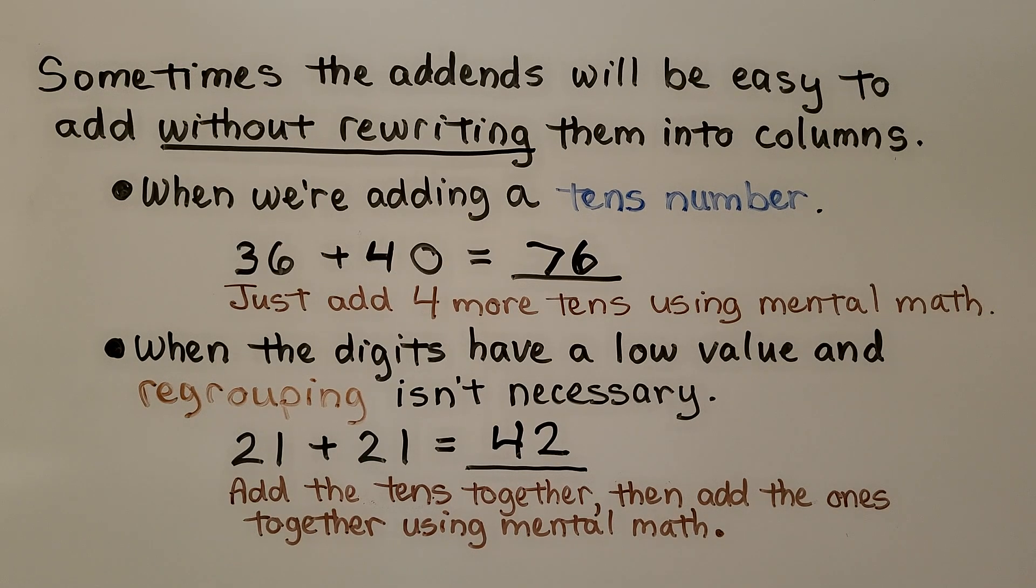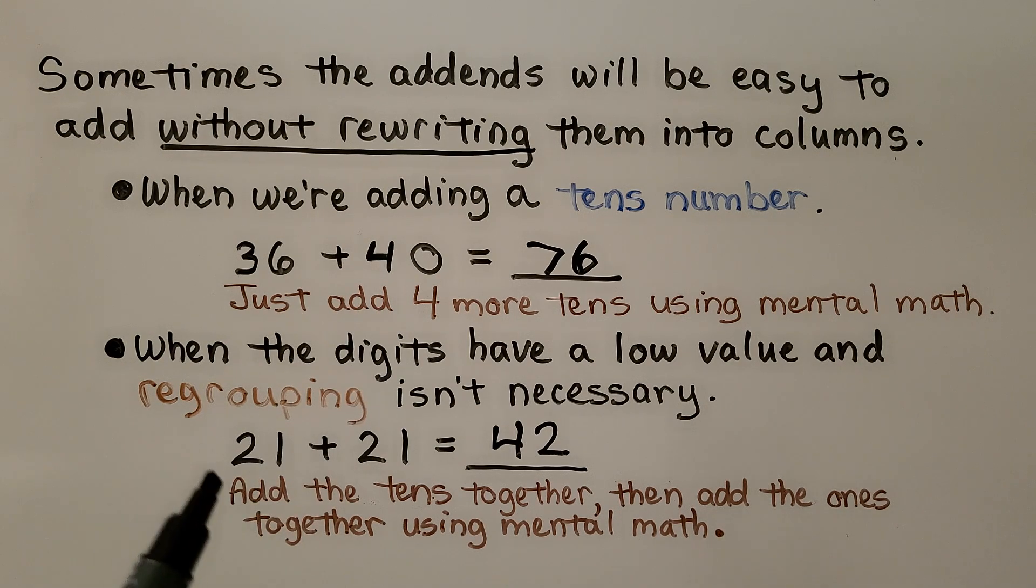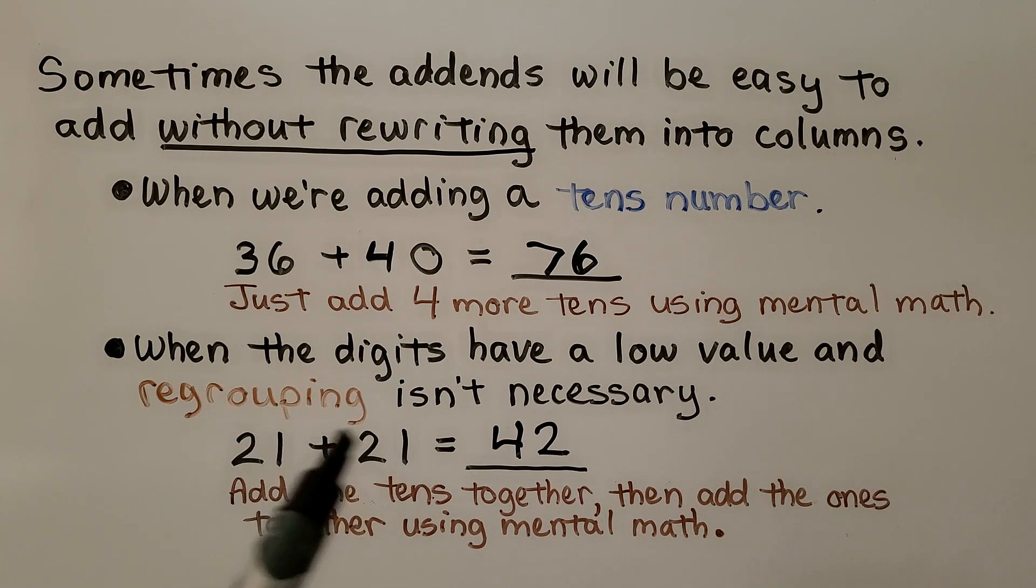So mental math is easier when we're adding just tens, like a tens number, or when the digits have a very low value and we can just quickly add them using mental math.